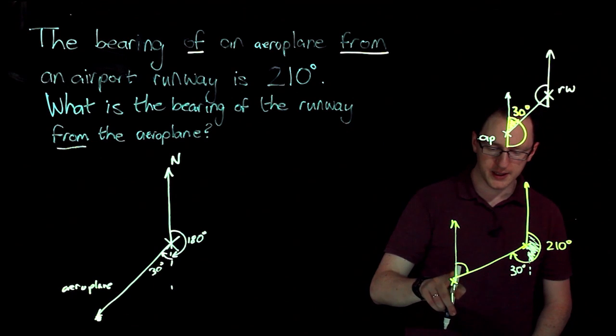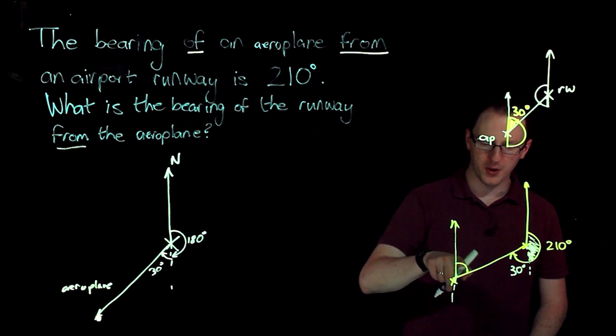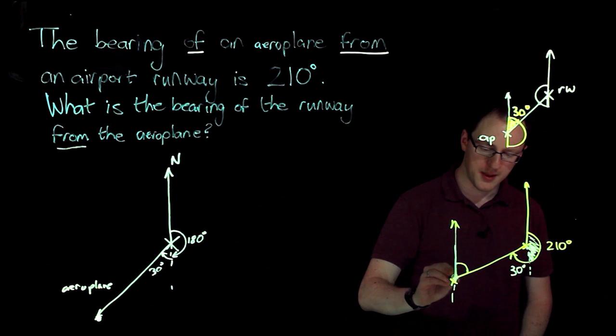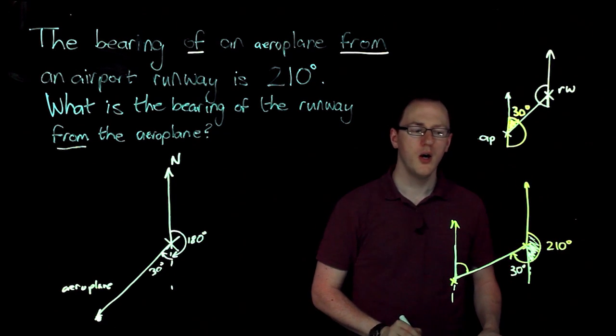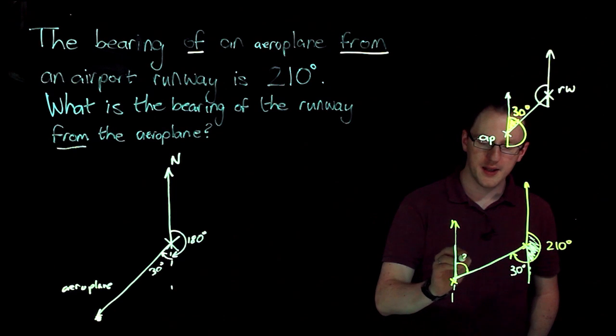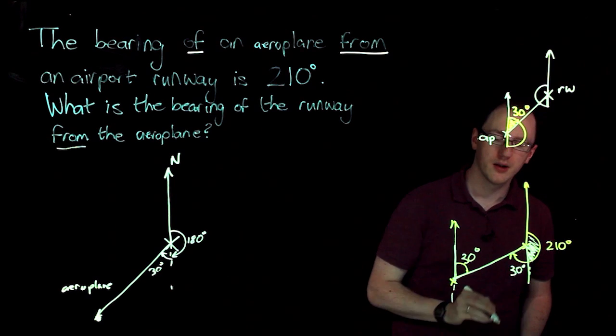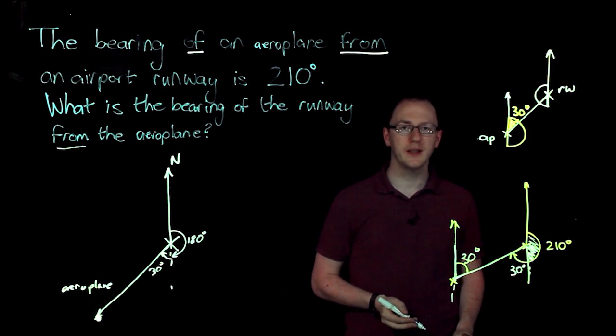So we've got two parallel lines. We've got this angle and we want this angle. Well, those two angles are alternate angles, which means if that's 30 degrees, then that's 30 degrees. So our bearing is 30 degrees.